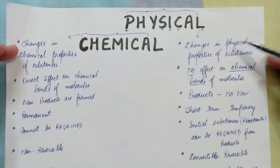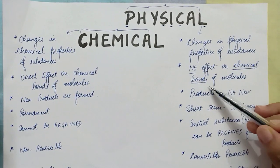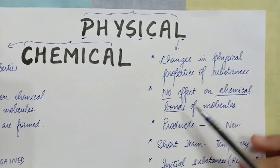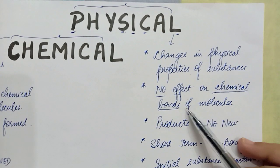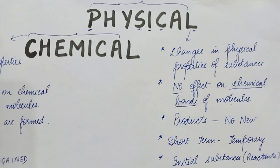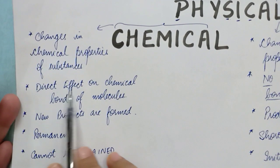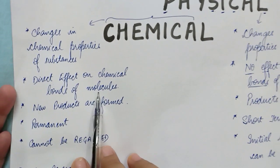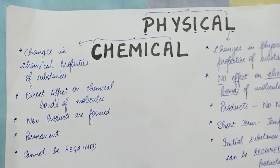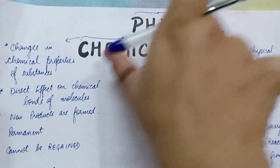From the first point we can derive the second point. In physical changes, there is no effect on the chemical bonds of the molecules, because only physical properties are changing — there will only be rearrangement of the molecules. On the other hand, chemical changes have a direct effect on the chemical bonds: old chemical bonds will be broken and new chemical bonds will be formed.